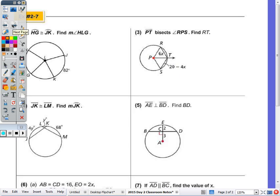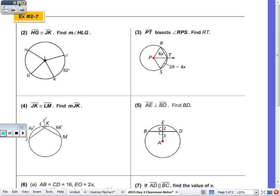Alright, example number two. It says that arc HG is congruent to arc JK. Find the measure of angle HLG. So HLG is here, and arc HG is congruent to JK. So if arc JK measures 82 degrees, then arc HG measures 82 degrees, and these two central angles are going to be congruent and also equal to 82 degrees. So the measure of angle HLG is 82 degrees.